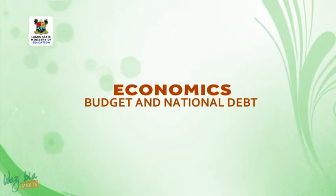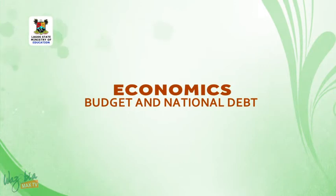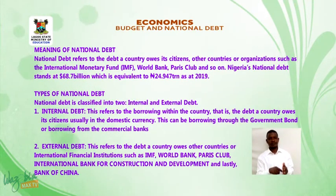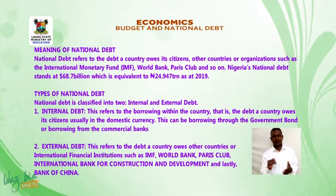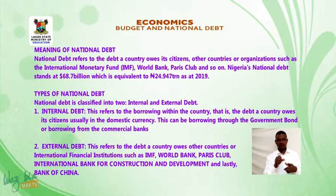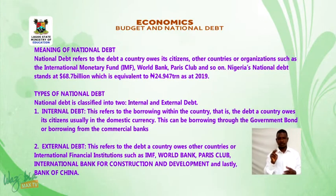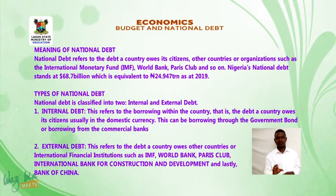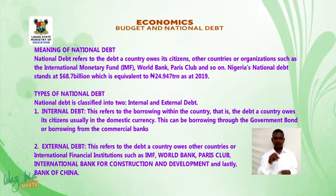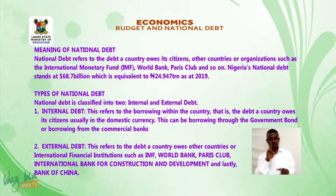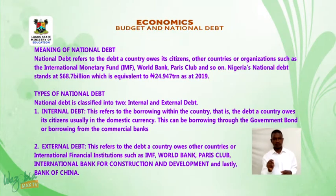Welcome back to the continuation of this broadcast. We have considered the meaning of budget, types and uses of budget. I shall now be discussing the meaning of national debt. National debt refers to the debt a country holds with its citizens, other countries, or organizations such as the International Monetary Fund (IMF), World Bank, Paris Club, and so on. Nigeria's national debt stands at 68.7 billion US dollars, which is equivalent to 24.947 trillion naira as at 2019.